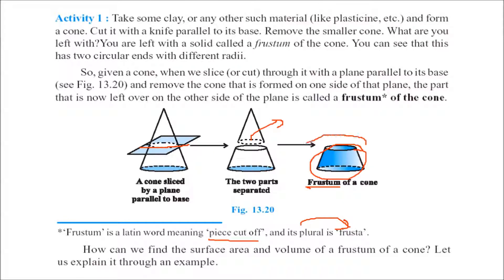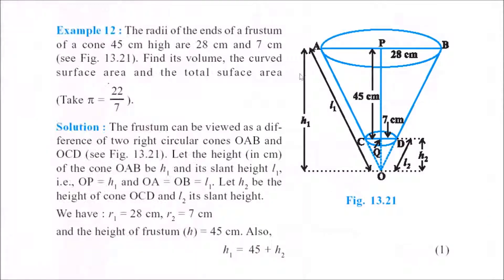Now, let us find out the surface area and volume of the frustum of a cone, and we will explain it through an example. The radius of ends of a frustum of a cone which is 45 centimeter high are 28 centimeter and 7 centimeter. So, if this height is h1, and we consider a small distance h2 making a full cone, and the complete distance as h1, then 45 plus h2 is actually h1.